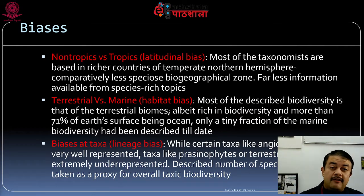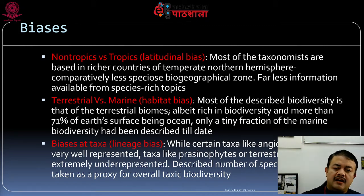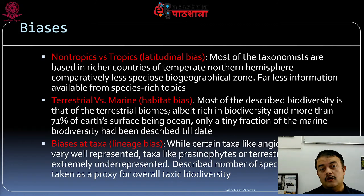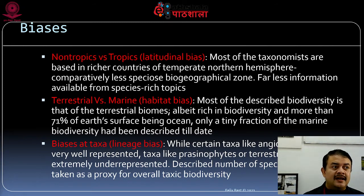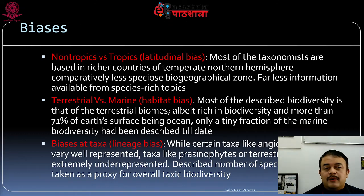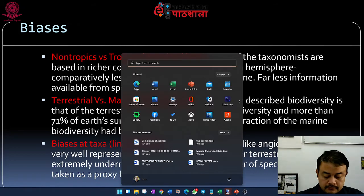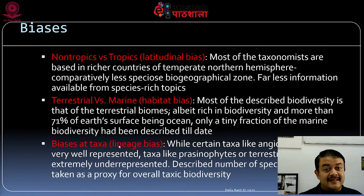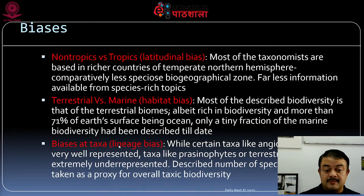There is also lineage bias at the taxon level. Certain taxa like flowering plants are very well characterized. But others, like golden brown algae (chrysophytes) or prasinophytes, have very few people working on them. These lineages are not less diverse in reality — it is just because people are not working on them that they appear comparatively less explored.